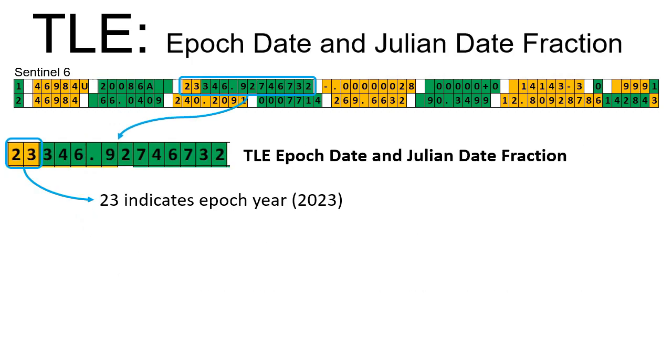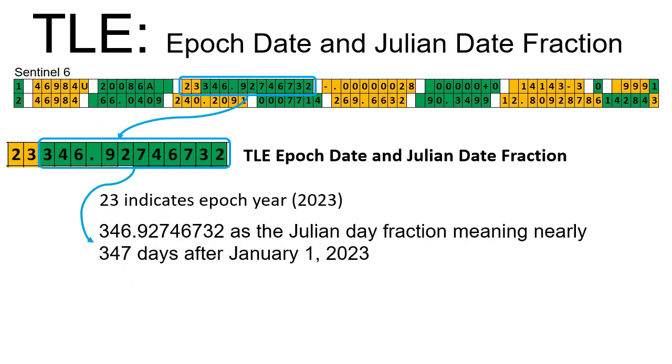TLE epoch date and Julian date fraction. 23 indicates epoch year. 346.92746732 is the Julian day fraction, meaning nearly 347 days after January 1, 2023.